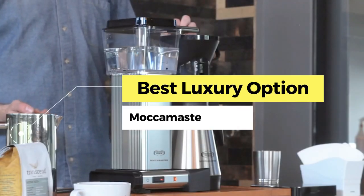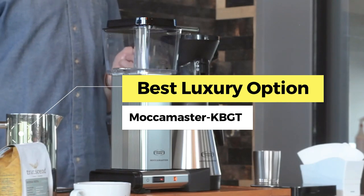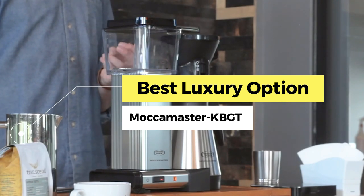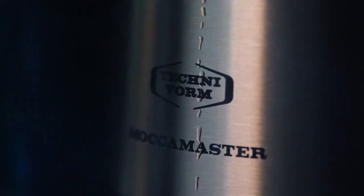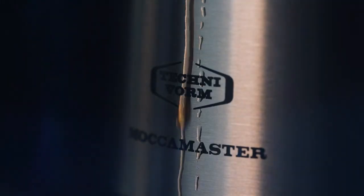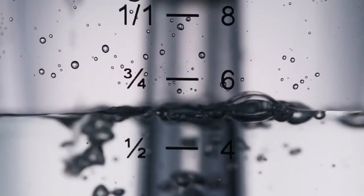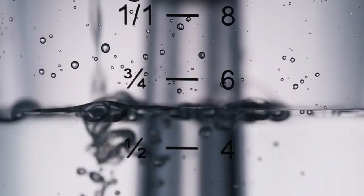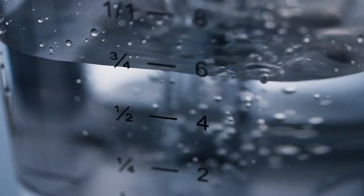Next, the best luxury option: The Mokamaster KBGT. The Mokamaster KBGT is a handmade filter coffee machine that stands out for its durability, versatility and efficiency. One of the critical features of the Mokamaster KBGT is its quick brewing time.